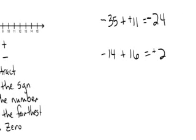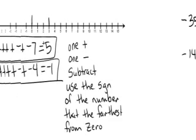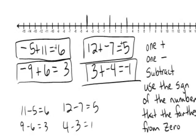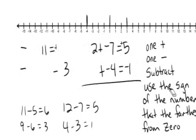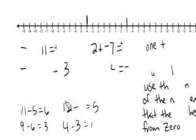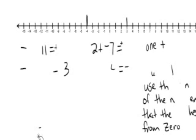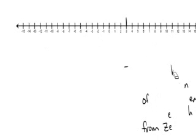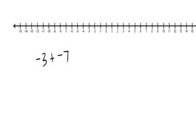That works when you have one of each sign. But what happens if both numbers have the same sign? Let's go back to the number line and try negative 3 plus negative 7. I'm going to find negative 3 on my number line, and then the negative 7 means I'm going to go in the negative direction 7 spaces.